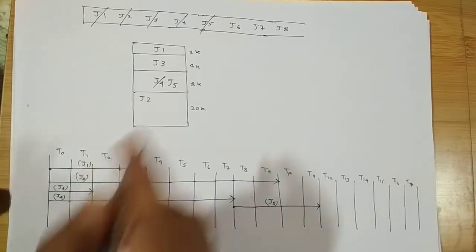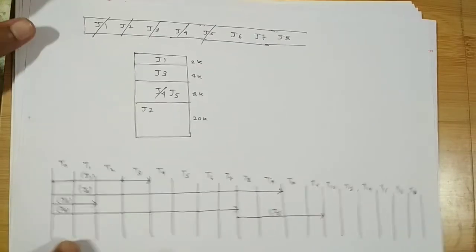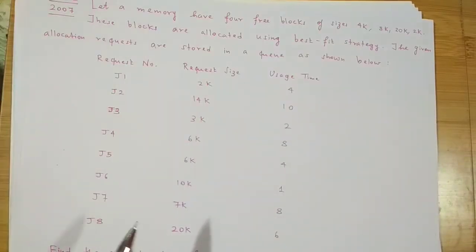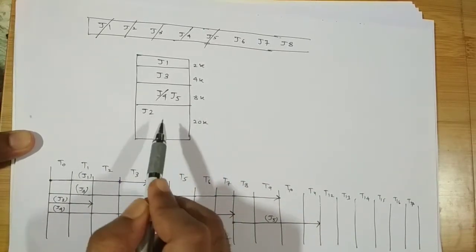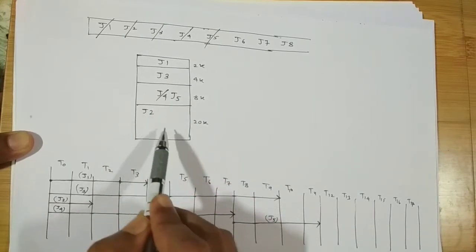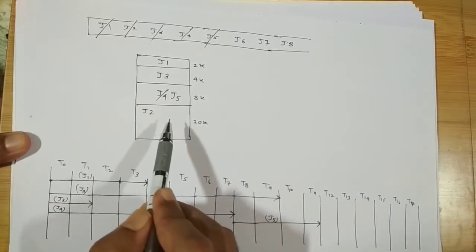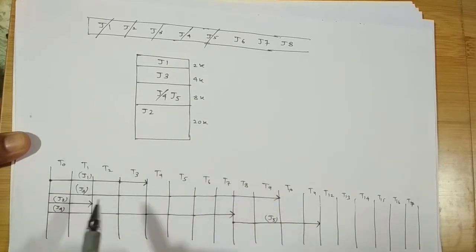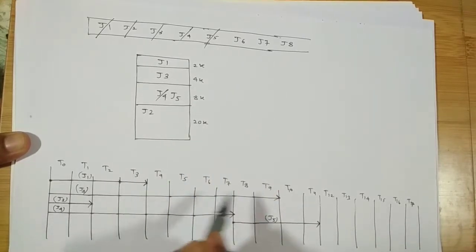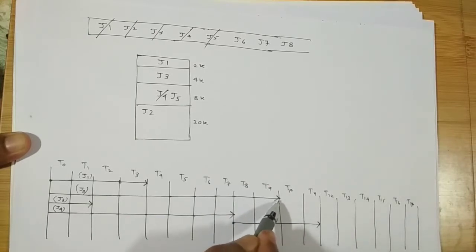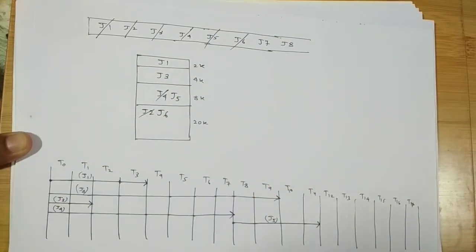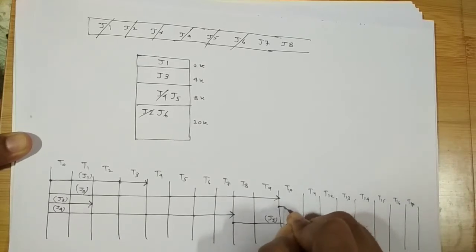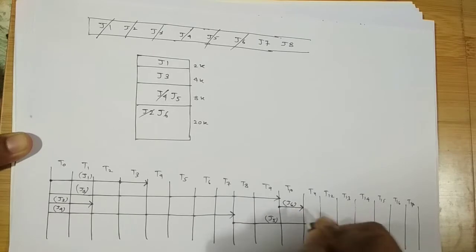J6 has a requirement of 10K with a usage time of 1 unit. The closest available block is the 20K block, which becomes free when J2 finishes at t10. So J6 takes the 20K block and runs for just 1 unit of time.